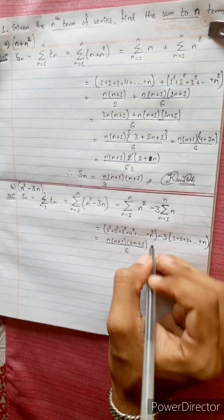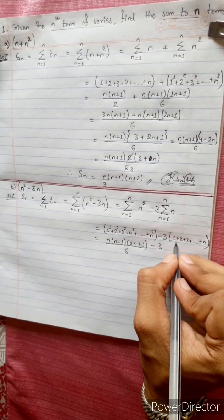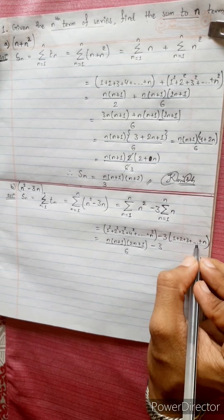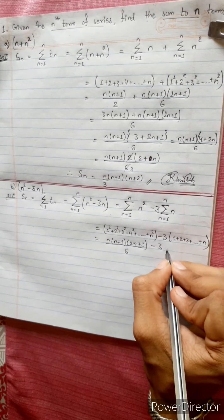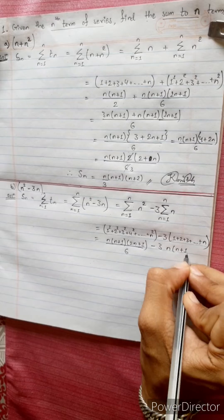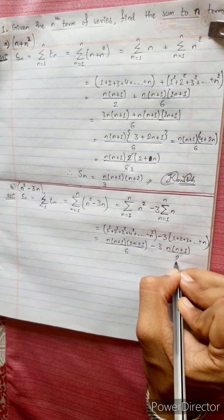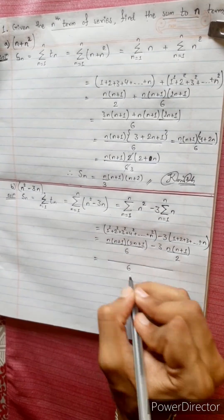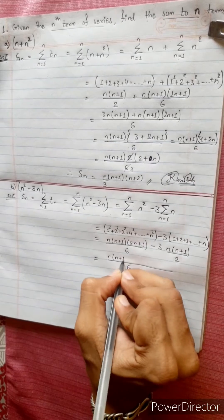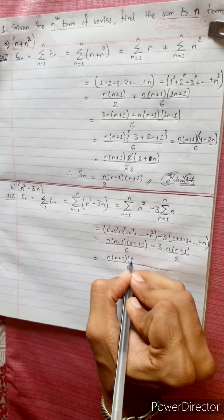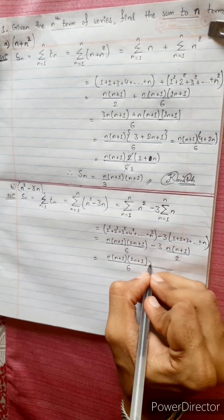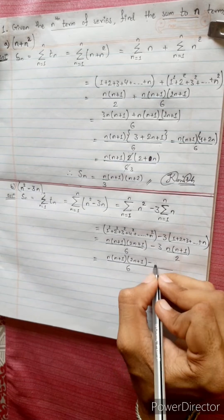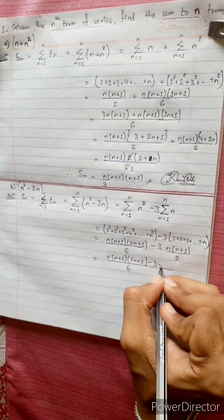Using the formula for sum of squares of natural numbers: n(n+1)(2n+1)/6, minus 3 times the sum of natural numbers formula n(n+1)/2. The denominator for the squares formula is 6, giving n(n+1)(2n+1)/6.